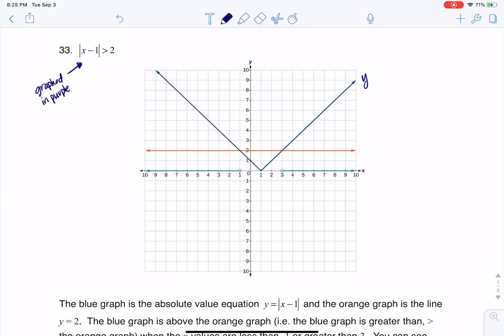Alright, so this is bluish purple but it's y equals the absolute value of x minus 1. You can see here it's got a vertex at 1, 0 and then it makes that v.